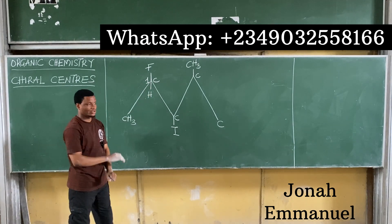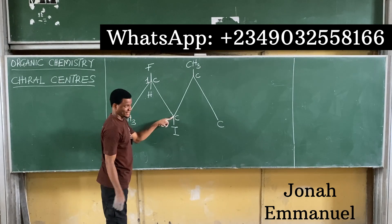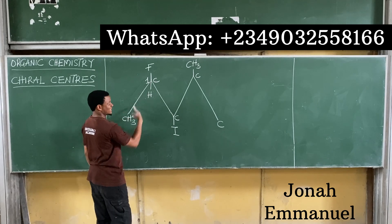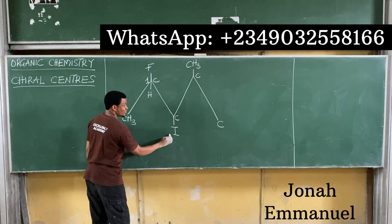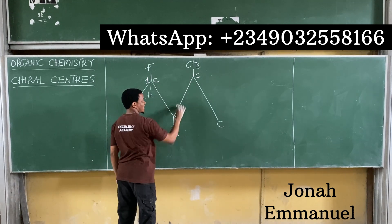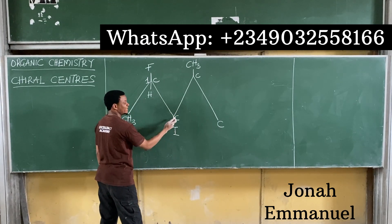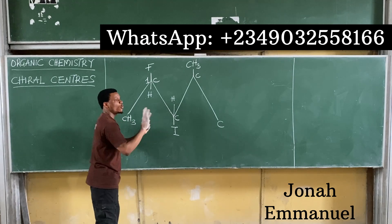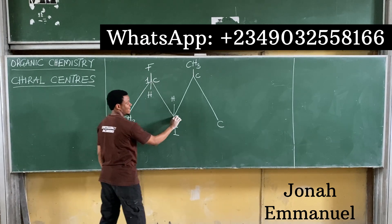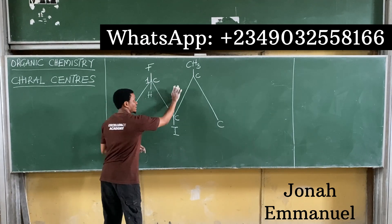Come to this next carbon. Is this a chiral center? Coming down here I have iodine. This attachment is different from iodine — two different things. I have CH3 here, and this chain, which is different from the other attachments. To complete it, hydrogen. I have four different species: hydrogen one, iodine two, this whole chain three, and this group four. So I have four different attachments — this is my second chiral center.